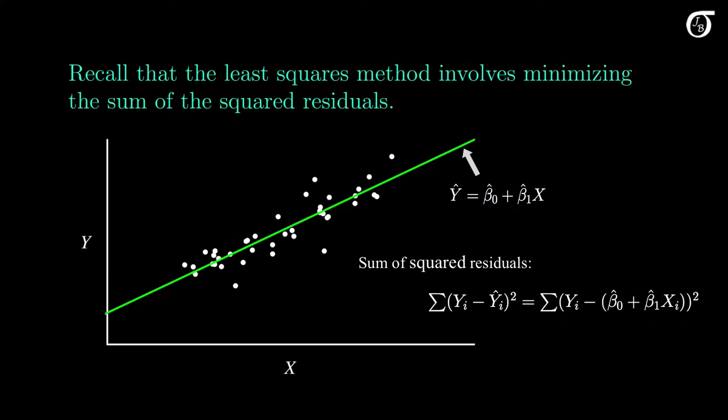But what are the formulas for these estimators? It's all well and good to say that we minimize the sum of squared residuals, but how do we do that? How do we find the values that give us this green line? We want to minimize a certain function, and that sounds like a job for calculus.